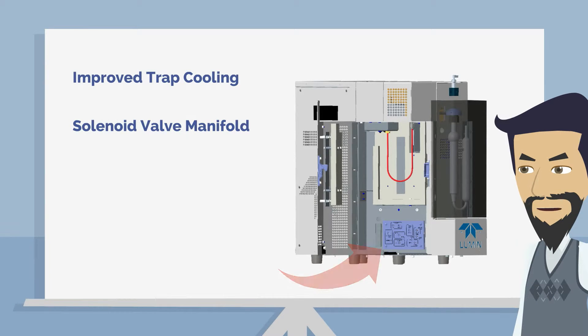The Lumen is also equipped with a solenoid valve manifold that brings all of the solenoid valves into one location on the front of the instrument. This makes benchmark testing, diagnostic tasks, and other maintenance tasks simpler.